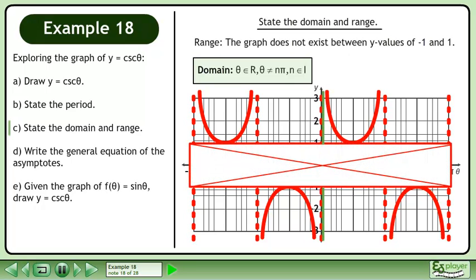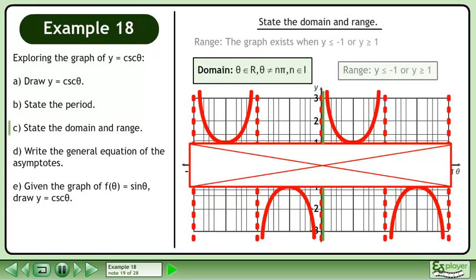The graph does not exist between y values of negative 1 and 1. The graph exists when y is less than or equal to negative 1, or y is greater than or equal to 1. This is the range.